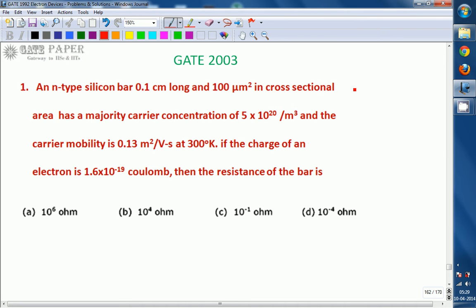That is room temperature. If the charge of an electron is 1.6×10⁻¹⁹ coulombs, then the resistance of the bar is?